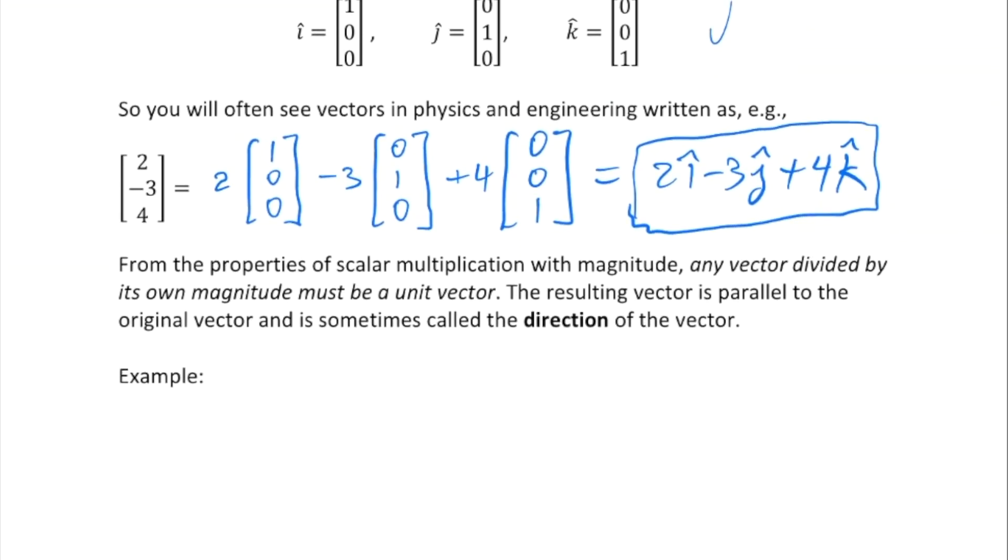One little typo here: from the properties of scalar multiplication with magnitude, any non-zero vector divided by its own magnitude must be a unit vector. That is easy to prove and quite true. The resulting vector is parallel to the original vector and is sometimes called the direction of the vector.